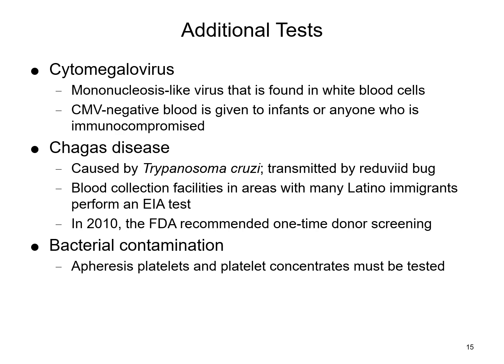Chagas disease is caused by T. cruzi and transmitted by the kissing bug. Blood collection facilities in areas with many Latino immigrants will perform EIA-type testing for this. In 2010, the FDA recommended a one-time donor screening — if the donor has never been screened, they are screened once, and if negative, they may not need to be screened again unless the questionnaire indicates otherwise.